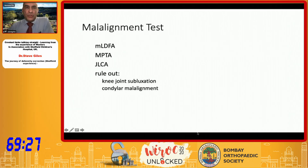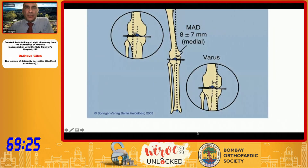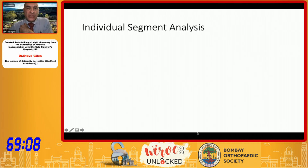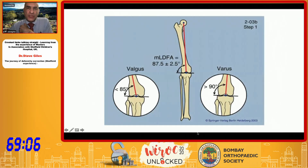Once you've looked at the malalignment test, you need to make sure there are no problems within the knee joint itself — be it subluxation or whether the knee joint is open or closed due to laxity or damage. The individual segments can then be analysed to see where the varus or valgus is actually occurring.